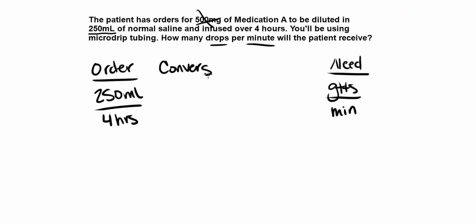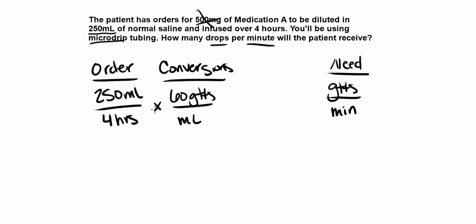Step 3: what are our conversion factors? We need to get from milliliters to drops and from hours to minutes. The question tells us we have micro drip tubing, and as we know, micro drip tubing is always 60 GTTS per mL — that's the standard. Anytime you see micro drip tubing, it means 60 drops per mL. So our first conversion is 60 GTTS over 1 mL. This cancels the milliliters perfectly, and we're left with GTTS on top — drops — which is exactly what we need.